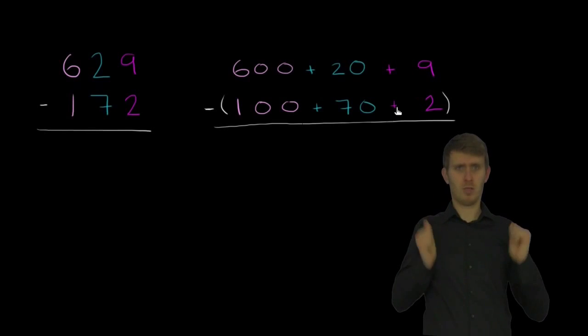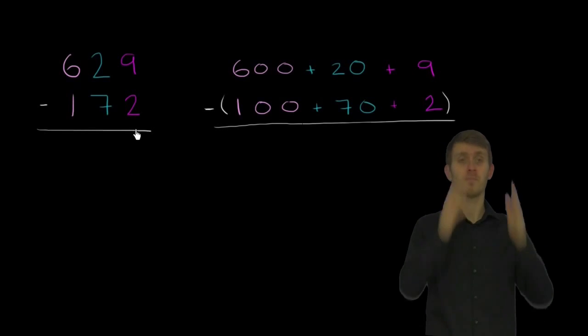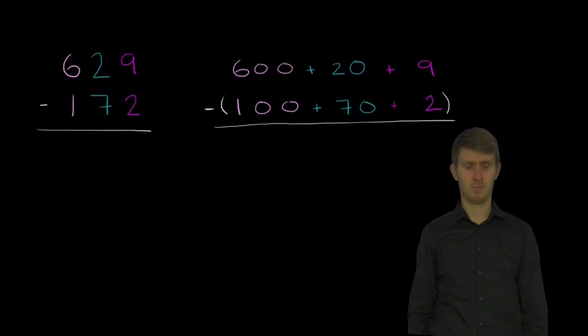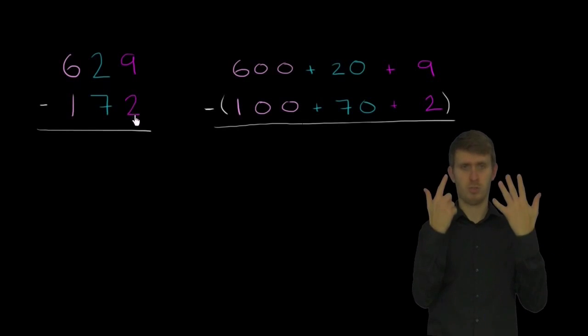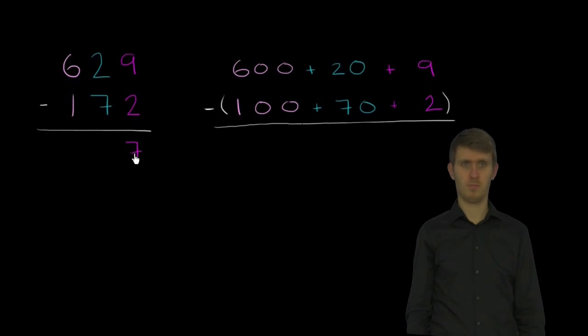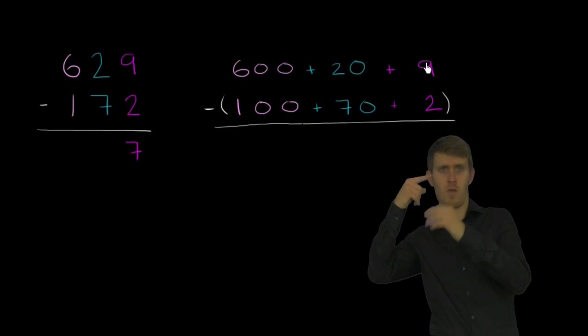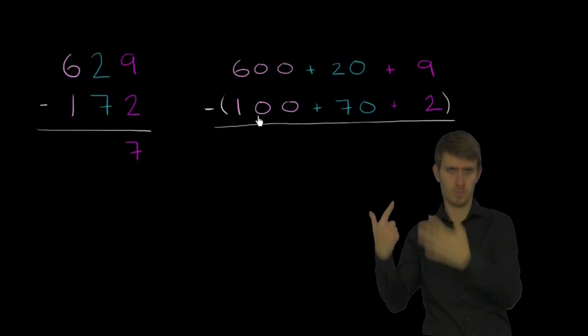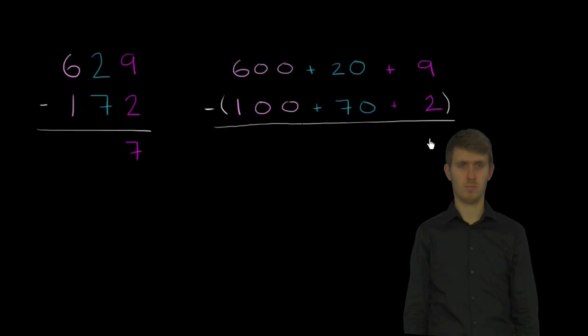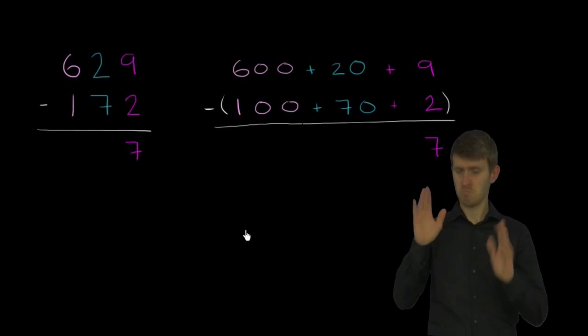We'll see why this is useful in a second. So let's just start subtracting, and we'll start with the ones place. So we have 9 minus 2. Well, that's clearly just 7. And over here, we could also say 9 minus 2, we have the subtraction out front. That is going to be 7. Pretty straightforward.